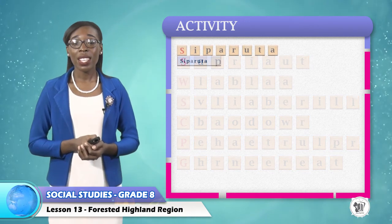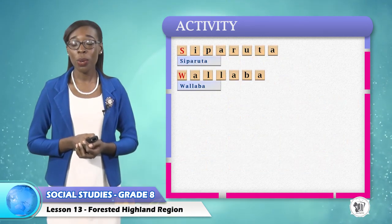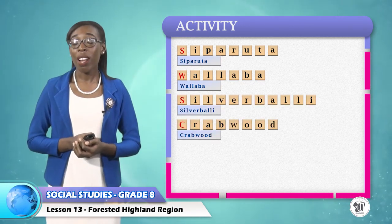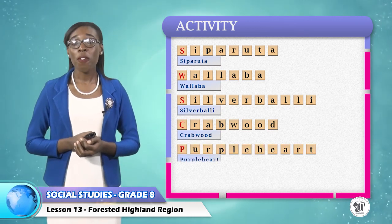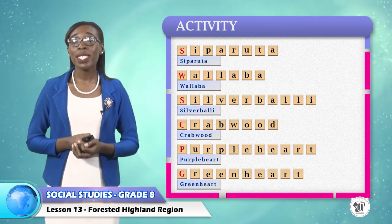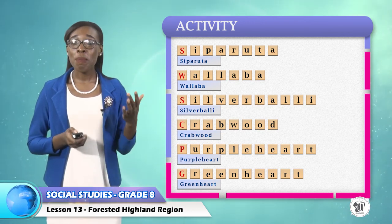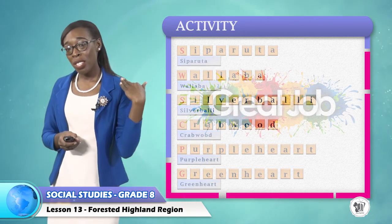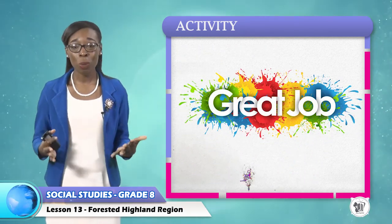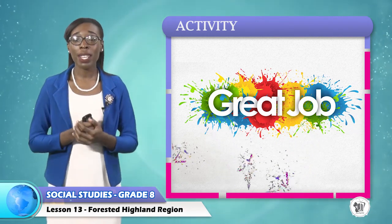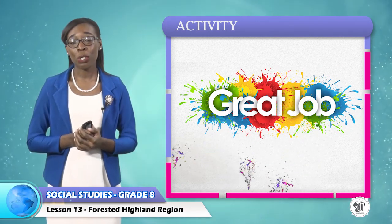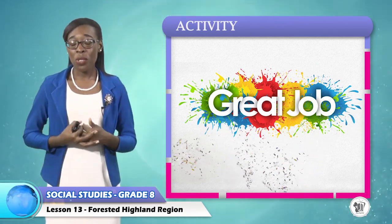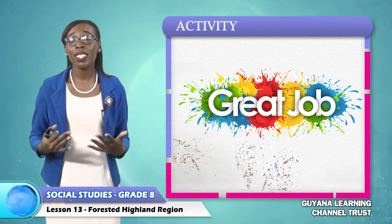Let's determine the correct names for these types of wood found in our forest. Number one is the Crabwood. Number two, the Wallaba. Number three, Silver Valley. Number four, Crabwood. Number five, Purple Heart. And number six, Green Heart. I commend you for completing this activity — give yourselves a pat on the shoulder. If you were able to get all six, good job to you. If you got a few correctly, still I commend you for a good job. Our rainforest truly has an abundance of types of wood.